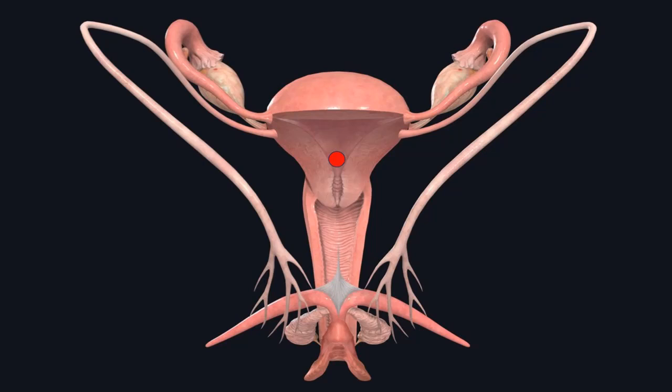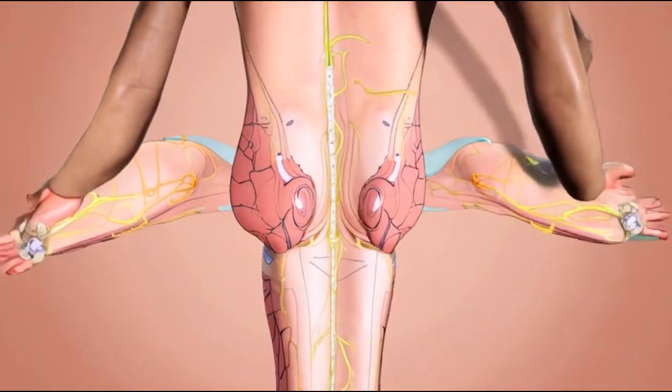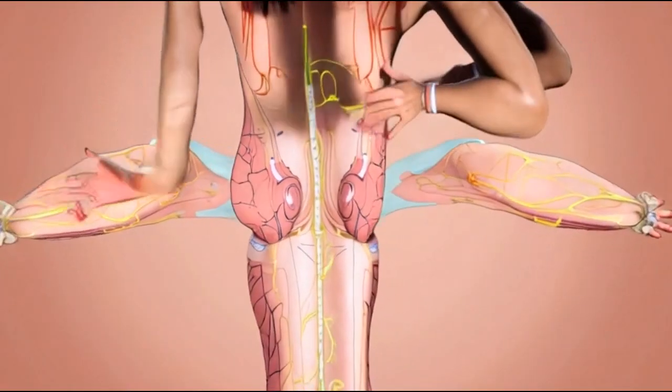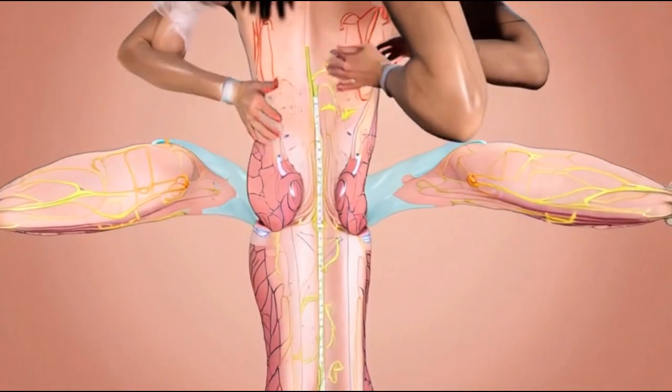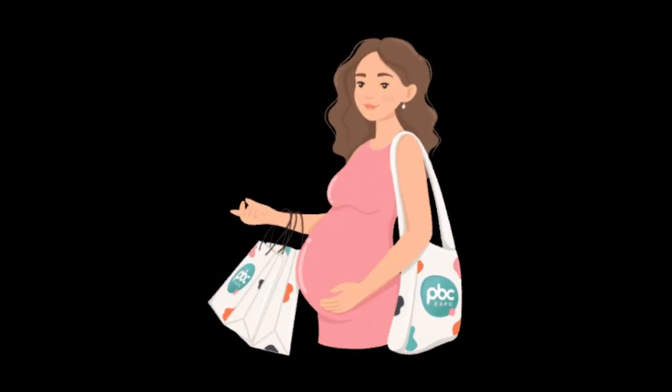Menstruation. Throughout a woman's life cycle, her body undergoes various physiological changes. One of the most significant recurring changes is the menstrual cycle, which occurs monthly and prepares the body for a possible pregnancy.